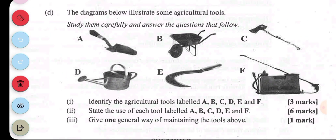The next question: the diagrams below illustrate some agricultural tools. Study them carefully and answer the questions that follow. We have tools A to F. A is a hand trowel, B is a wheelbarrow, C is an axe, D is a watering can, E is a sickle, and F is a knapsack sprayer.